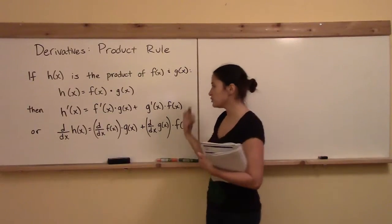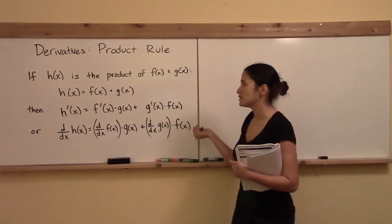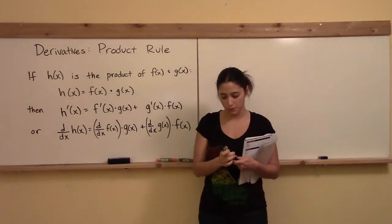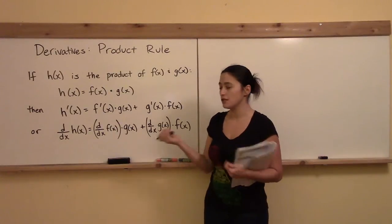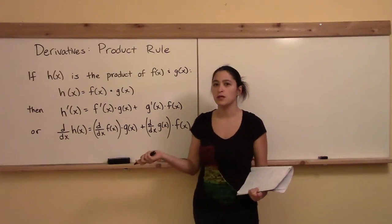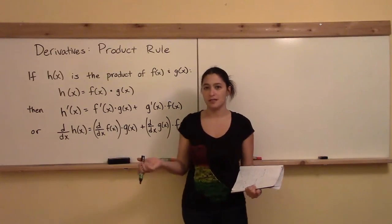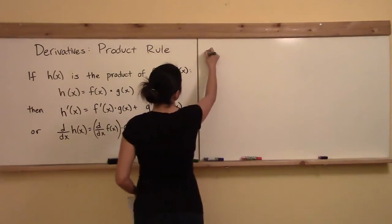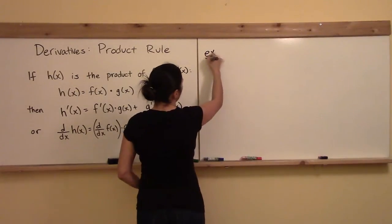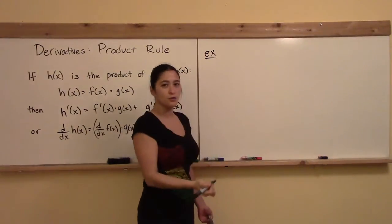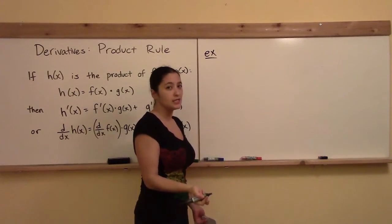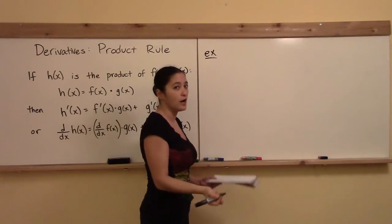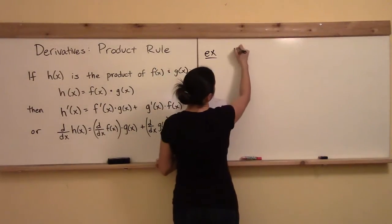I'm not going to derive this rule, but you can see a proof or derivation using the limit definition of the derivative. Let me go right into an example where I can show you what the derivative of a product is, and contrast that with what it is not — which is a common mistake.